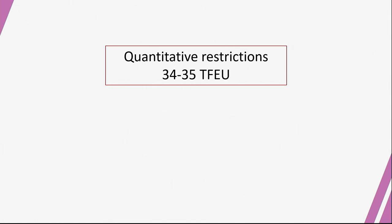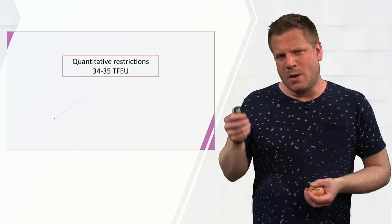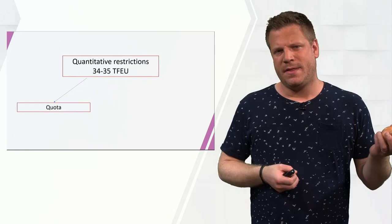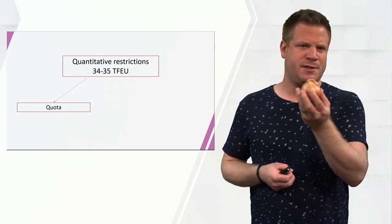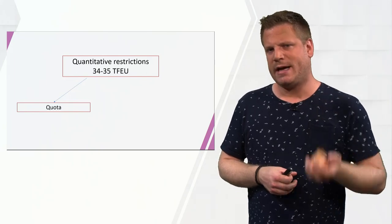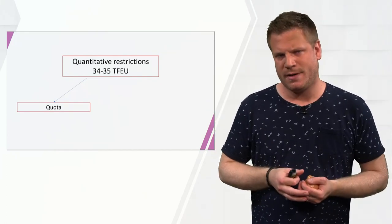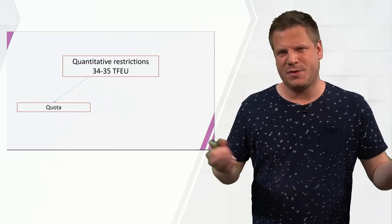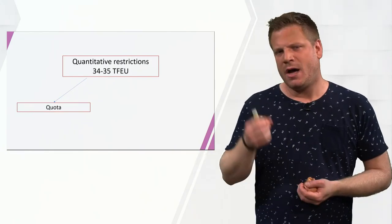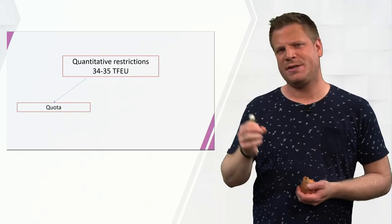Now let's discuss the quantitative restrictions, which are forbidden in Article 34 or 35 of the Treaty on the Functioning of the European Union, depending on whether you talk about import or export. A quantitative restriction could be a literal quota — for example, you can only import 500,000 pieces of onion, or even zero pieces. Both cases are forbidden. This is the most well-known example of a quantitative restriction, and will barely ever happen within the European Union unless we talk about serious risks for public health, which we will discuss later under Article 36 TFEU.